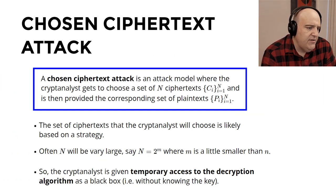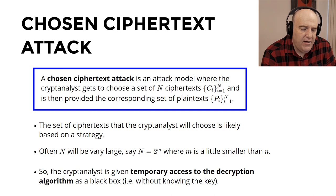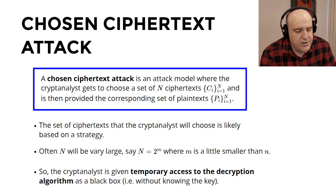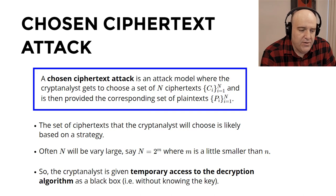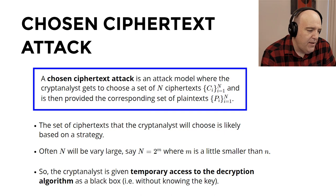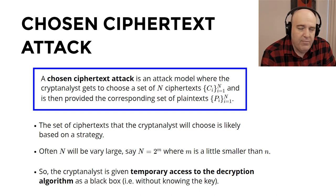For a chosen ciphertext attack, the cryptanalyst gets to choose a set of n ciphertexts Cᵢ for i = 1 to n, and is then provided the corresponding plaintexts Pᵢ. Usually the chosen ciphertexts are based on a strategy, and n will be very large — maybe 2ᵐ where m is slightly smaller than n. Remember there are only 2ⁿ possible ciphertext blocks, so we choose 2ᵐ where m is a little smaller. In a sense, the cryptanalyst is given temporary access to the decryption function as a black box — he doesn't know the key but is allowed to query the decryption function n times with his chosen ciphertexts.